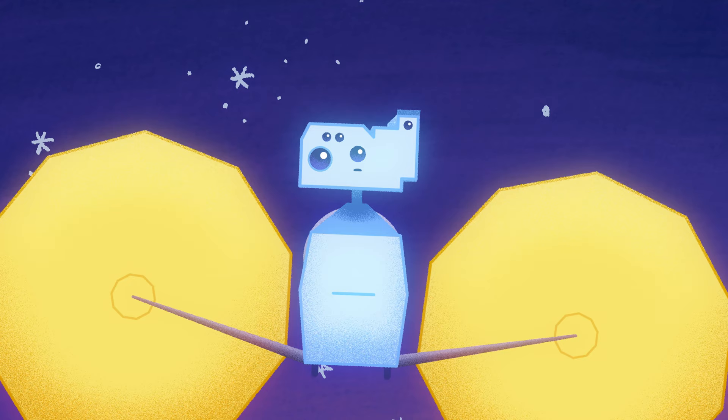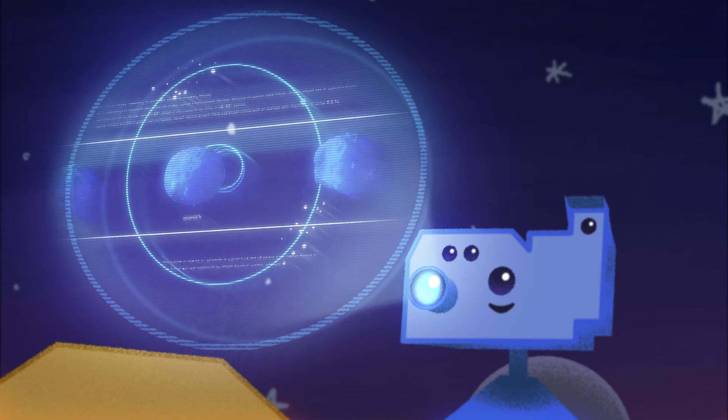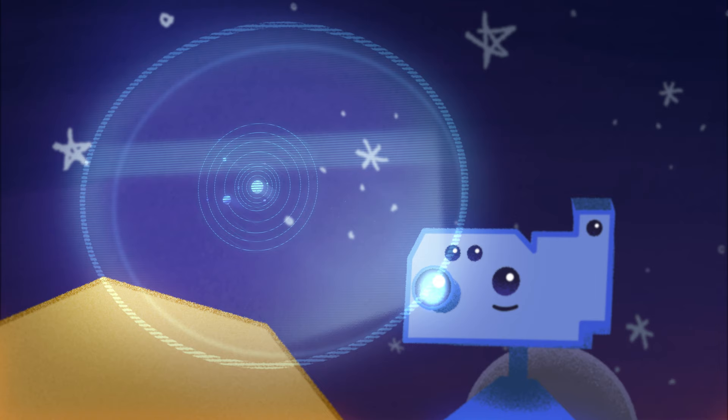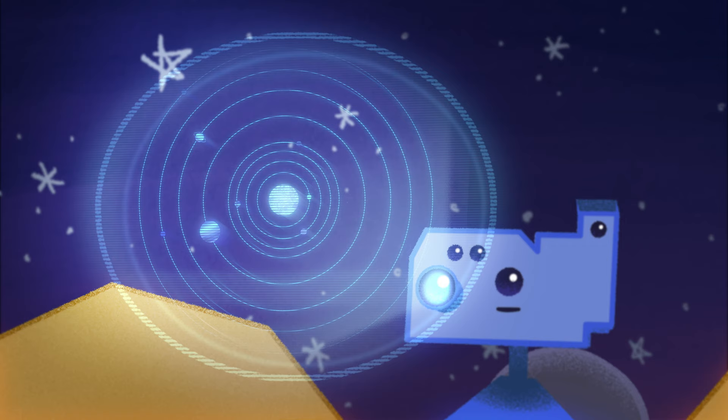I can't help but wonder though, why choose these asteroids in particular? I see, the scientific evidence says the Trojan asteroids are leftover material from the formation of the planets. These asteroids hold vital clues to understanding the history of our solar system.